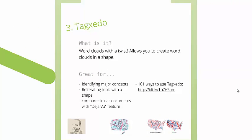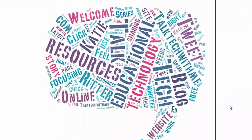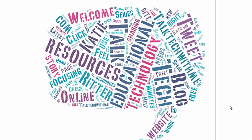Tagxedo are word clouds with a twist. They allow you to create word clouds in a shape, and there are so many different ways that you can use these in your classroom and with students, so much so that I felt it was really important to include a link to 101 ways to use Tagxedo, and this link is actually included in that bit.ly Diigo bookmark group. Here is information about Martin Luther King Jr. and the shape of his face. This is actually just a link that I put in to Tagxedo, and it populated a word cloud based on everything that was in my blog.